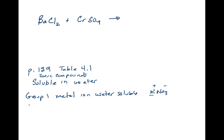So what that means is if I take solid potassium nitrate and I add it to water, it dissolves into potassium ions aqueous, which means dissolved in water, and nitrate ions dissolved in water. So any group 1 metal ion compound is water soluble.